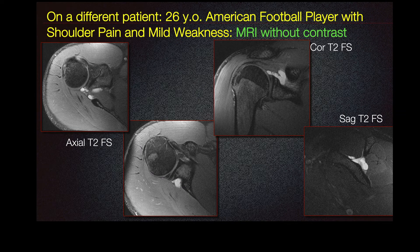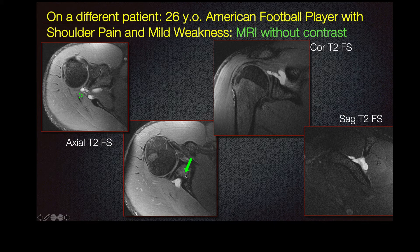On a different patient, this is a 26-year-old American football player with shoulder pain and mild weakness. An MRI without contrast was performed. In the left-hand corner, we can see a paralabral cyst extending from the tear to the spinoglenoid notch. This is your glenoid in our scapular spine. This can also be seen in our coronal T2 fat sat imaging, showing this paralabral cyst extending from the posterior superior labrum to the spinoglenoid notch, also seen here in sagittal T2 fat sat imaging.